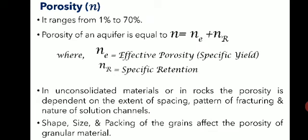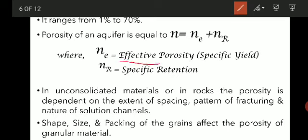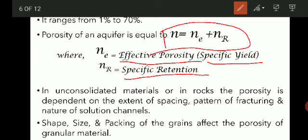Porosity ranges from 1% to 70% depending on the type of rock present. The porosity of an aquifer equals n = ne + nr, where ne stands for effective porosity or specific yield, and nr is specific retention. Remember this formula — the addition of specific yield and specific retention gives you the porosity. We will learn this in detail in upcoming classes.